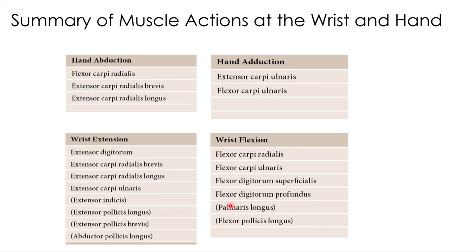That concludes this brief tour of the muscles of the upper limb. Review the activity, color in the muscles based on their actions, and notice the patterns of where muscles are located relative to what they do. The activity also includes questions about articulations, helping you tie that prior information to this new muscle content.